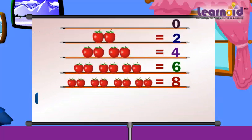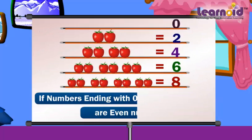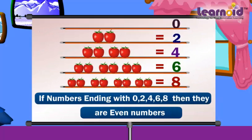If numbers are ending with 0, 2, 4, 6, 8, then they are even numbers.